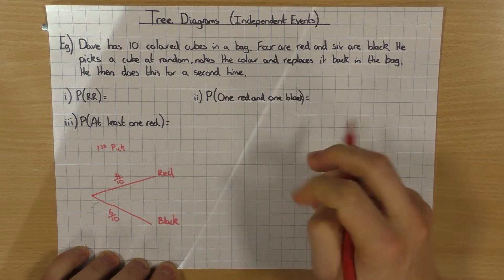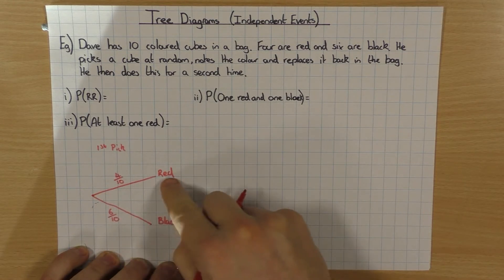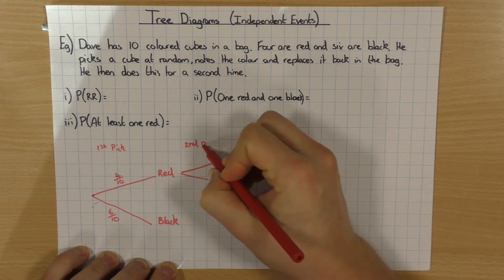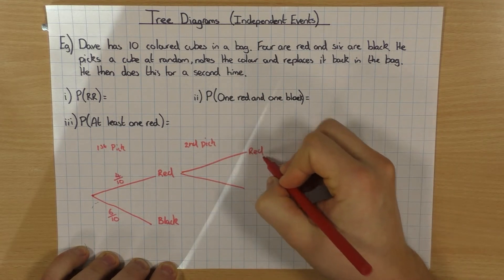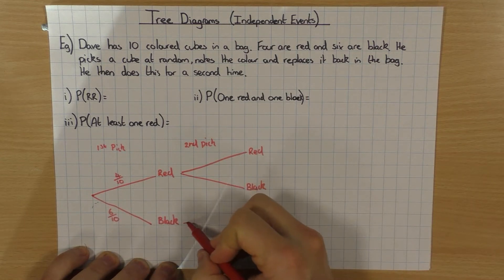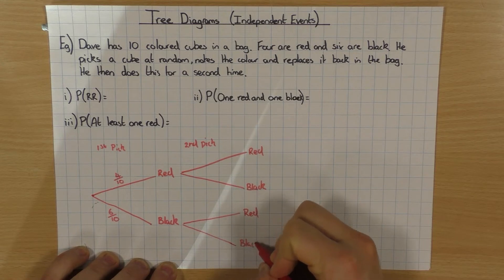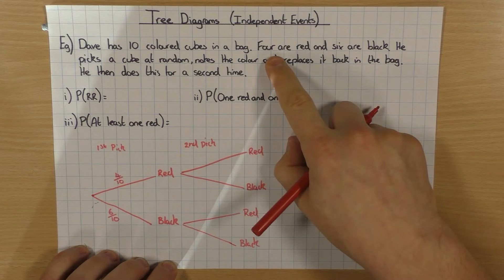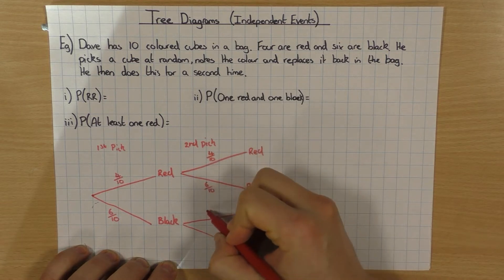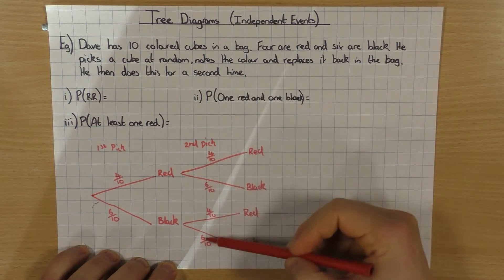That's the first pick. Then he does it again. Exactly the same thing — if he picked a red on the first pick, on his second pick he could get a red or a black. Or from the first pick he could have picked a black, in which case on the second pick he could again get a red or a black. Because he replaced the cube, I still have four red and six black, so the probabilities are exactly the same: four out of ten and six out of ten. Again, each set of branches adds up to one.